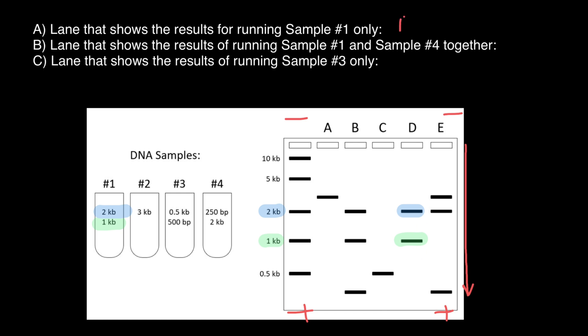Next question, a line that shows the results of running sample one and sample four together. Let's use different colors this time. For sample four, 250 base pairs is going to be red and two kilobase we already have. Let's highlight it with blue color.